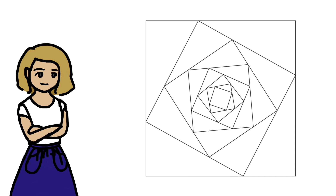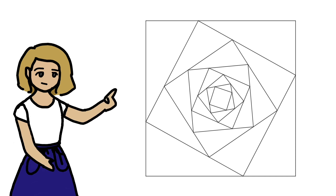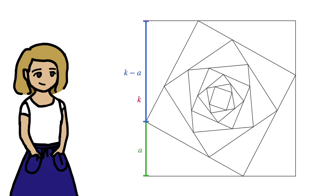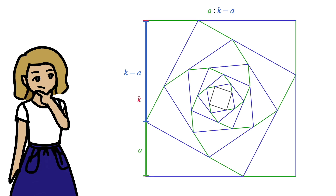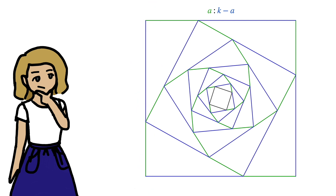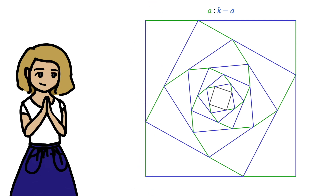Introducing some variables, I'm going to call the side length k, and this distance a. Then of course this distance here is equal to k minus a. And each line is divided into the same ratio of a to k minus a.